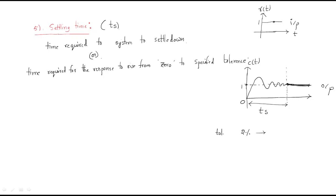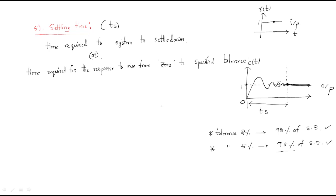For example, 2% tolerance means the output reaches 98% of the steady-state value. Five percent tolerance means the output reaches 95% of the steady-state value. Different tolerance levels give different settling time values, and we have different formulas depending on the tolerance chosen.